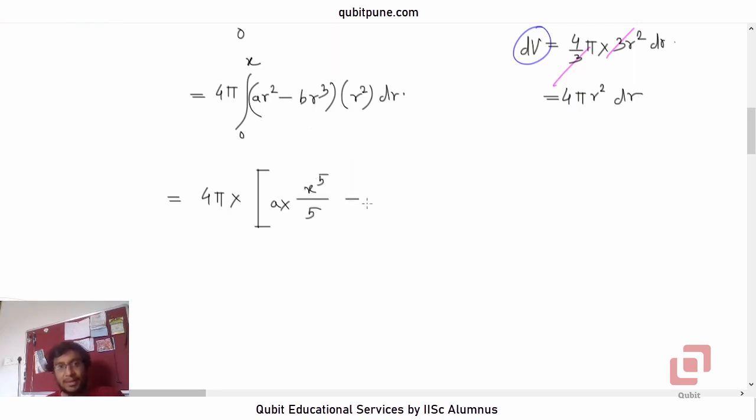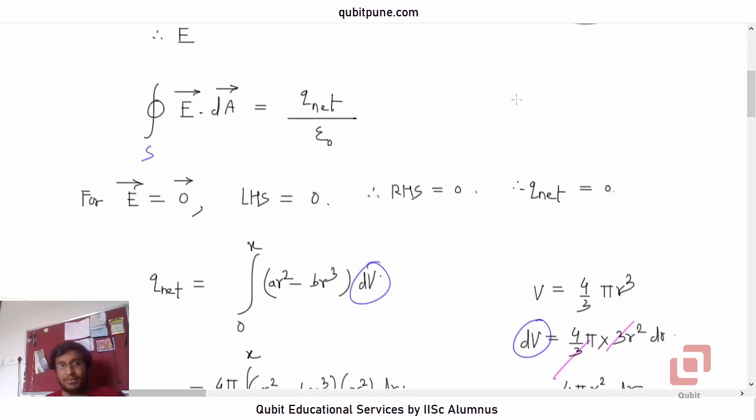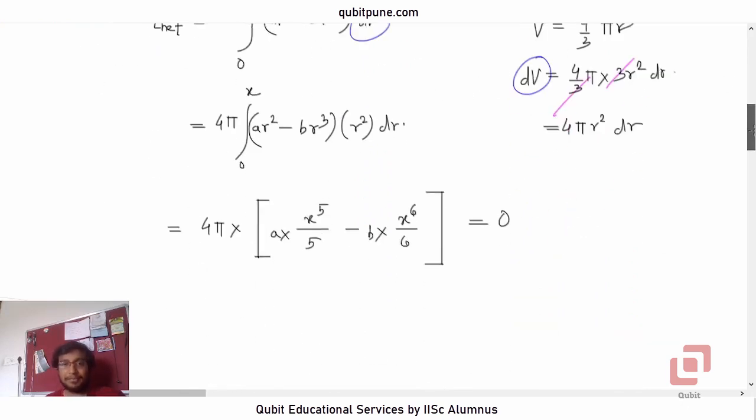Minus, now similarly, can I write this as x⁶/6? Yes, because r³ into r² will be r⁵. When integrated it will give us r⁶/6. Just substitute the upper limit and this is zero we know that, because electric field is zero, flux must be zero, therefore q_net will be zero.